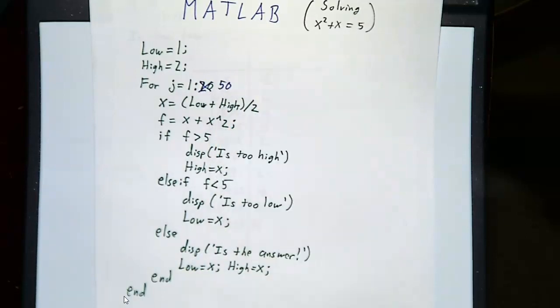If we did it 50 times, we would have gotten 15 decimal places of accuracy. Getting a computer to do many, many, many steps is just as easy as getting it to do a handful of steps.